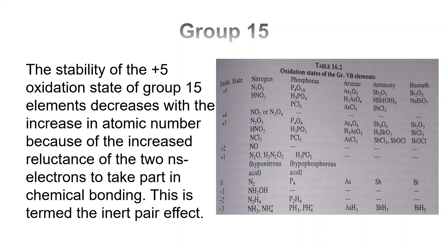The stability of the +5 oxidation state of group 15 elements decreases with the increase in atomic number, because of the increased reluctance of the two s-electrons to take part in chemical bonding — this is termed the inert pair effect. Pentavalent antimony compounds are less stable than the corresponding trivalent compounds, while bismuth forms pentavalent compounds only with the highly electronegative element oxygen, and even then it is rather unstable.